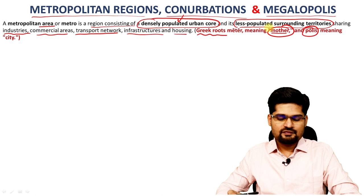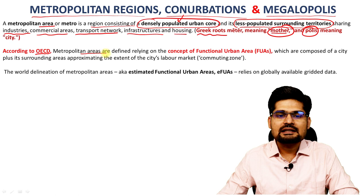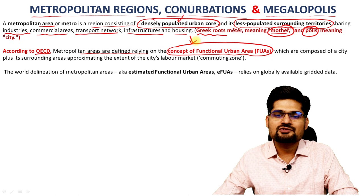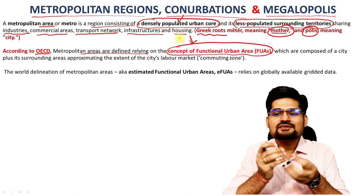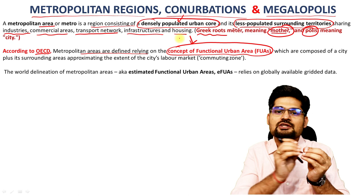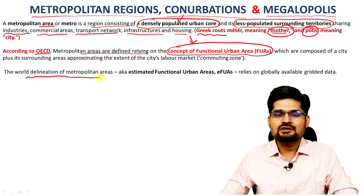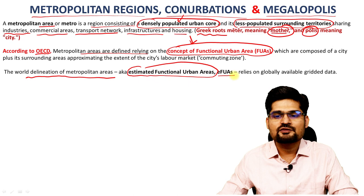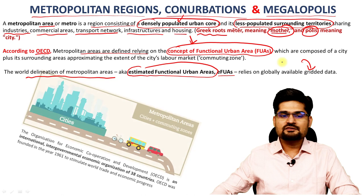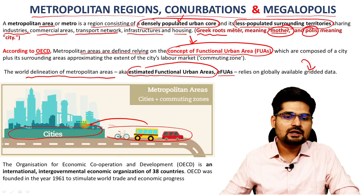According to the OECD, metropolitan areas are defined relying on the concept of functional urban areas — where urban functions happen and are shared from core to periphery. The world delineation of metropolitan areas, also known as Estimated Functional Urban Areas or EFUAs, relies globally on gridded data. In simple terms, it is the city area and its nearby area from where people commute to the city and go back.